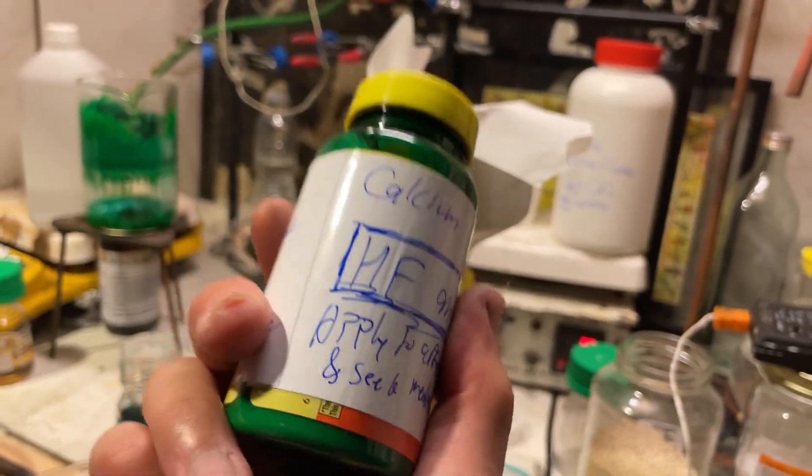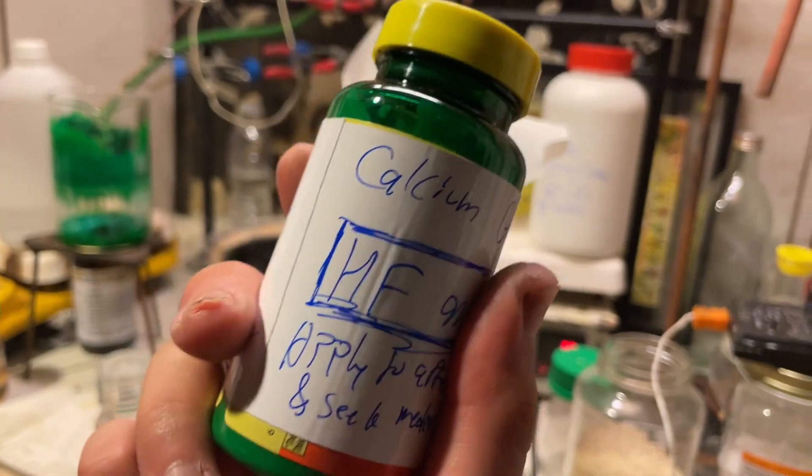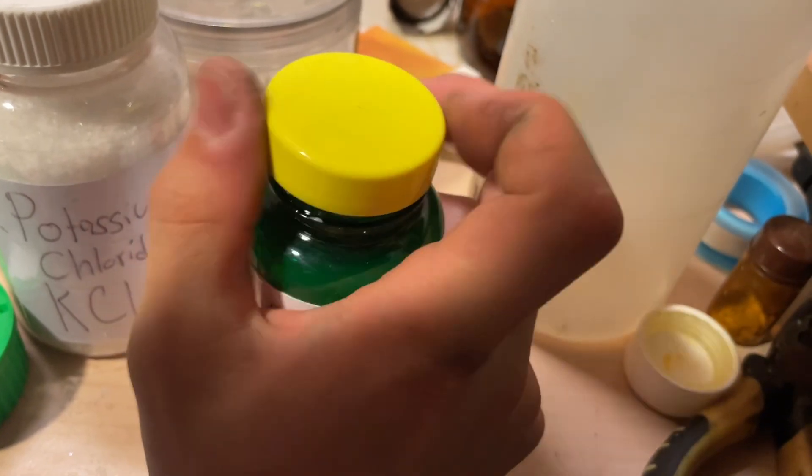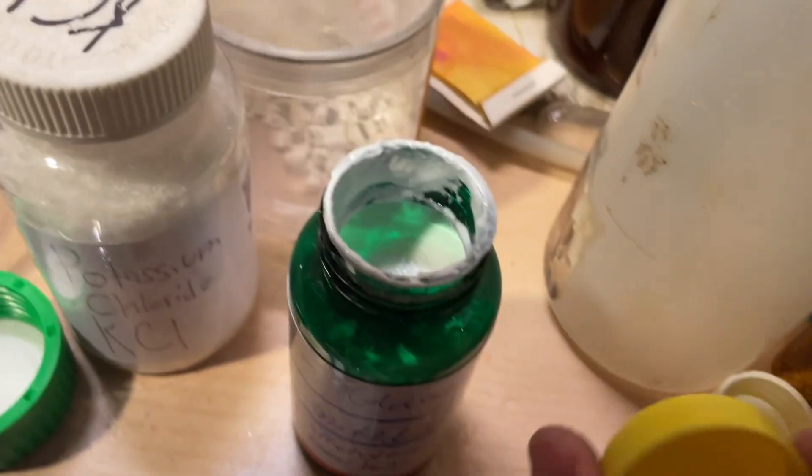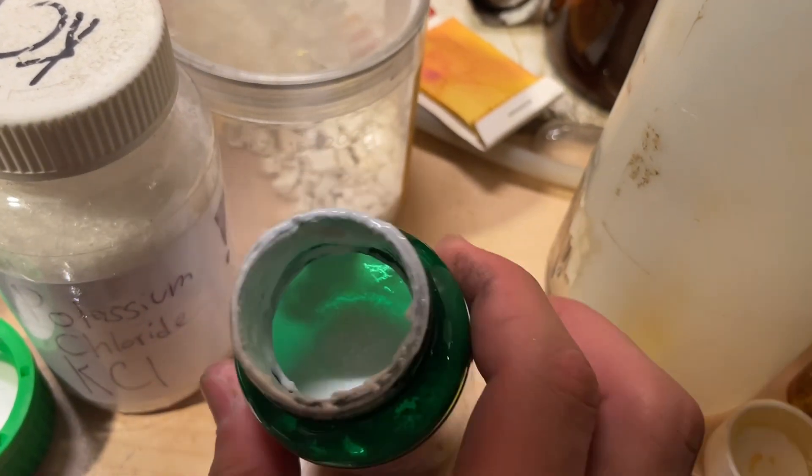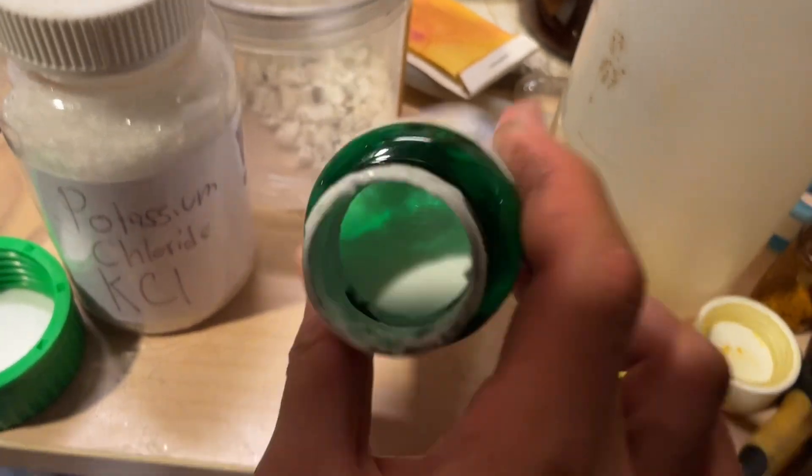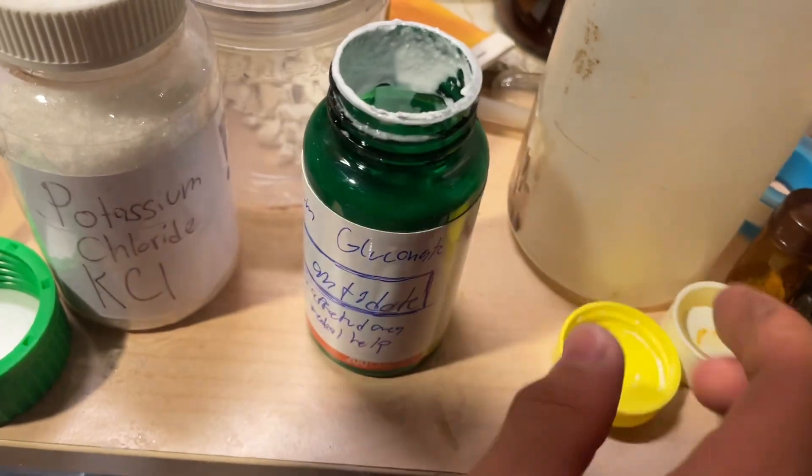So what I did is I just added approximately a 75 to 25 mixture by volume of calcium gluconate powder and water. Stirred it. There you go. There's a cream or a gel or a paste. It'll work.